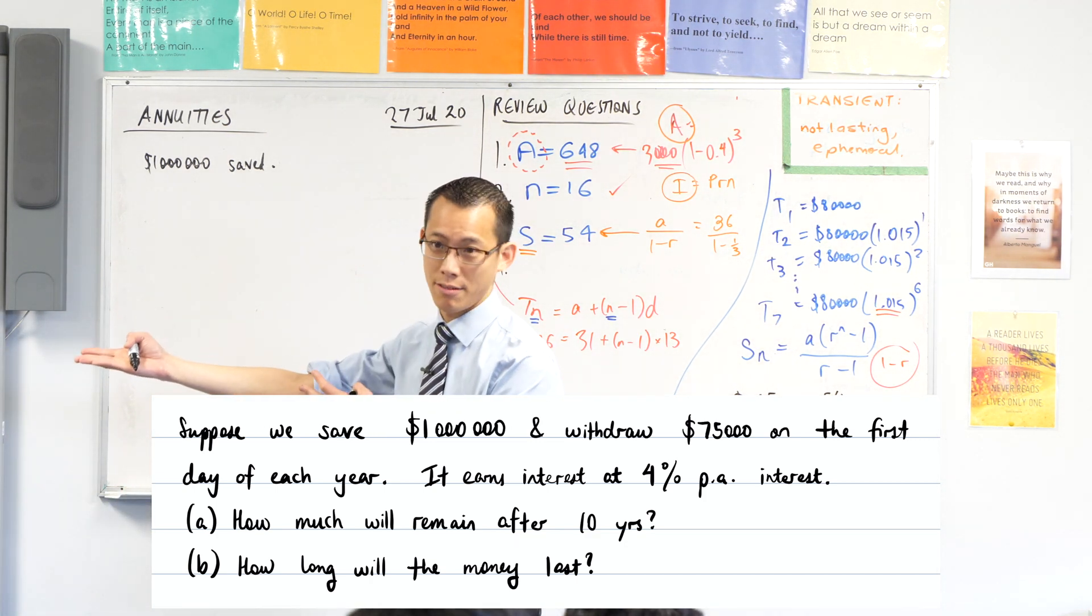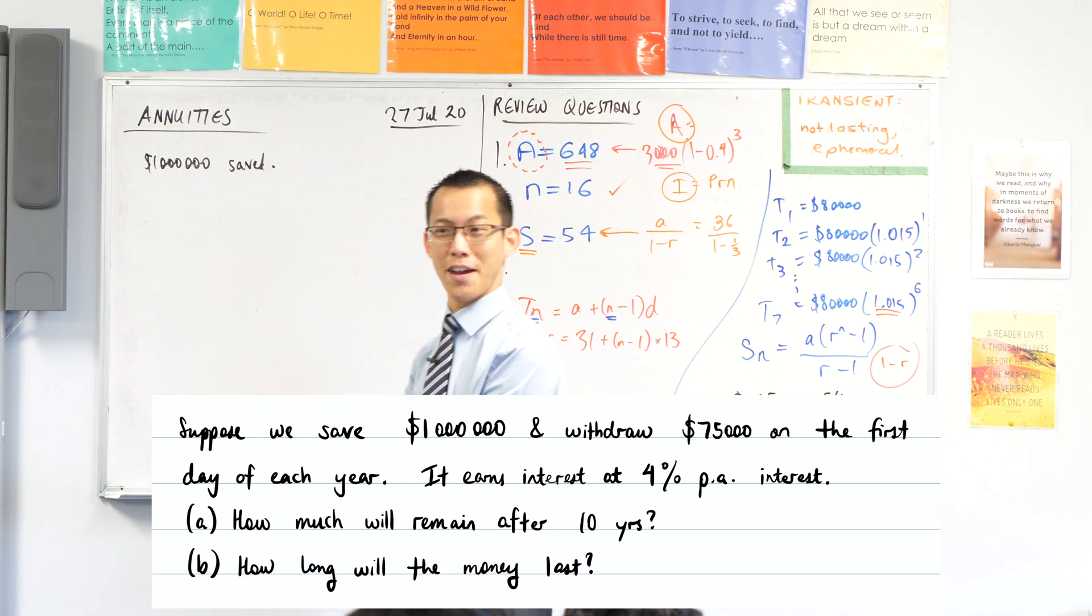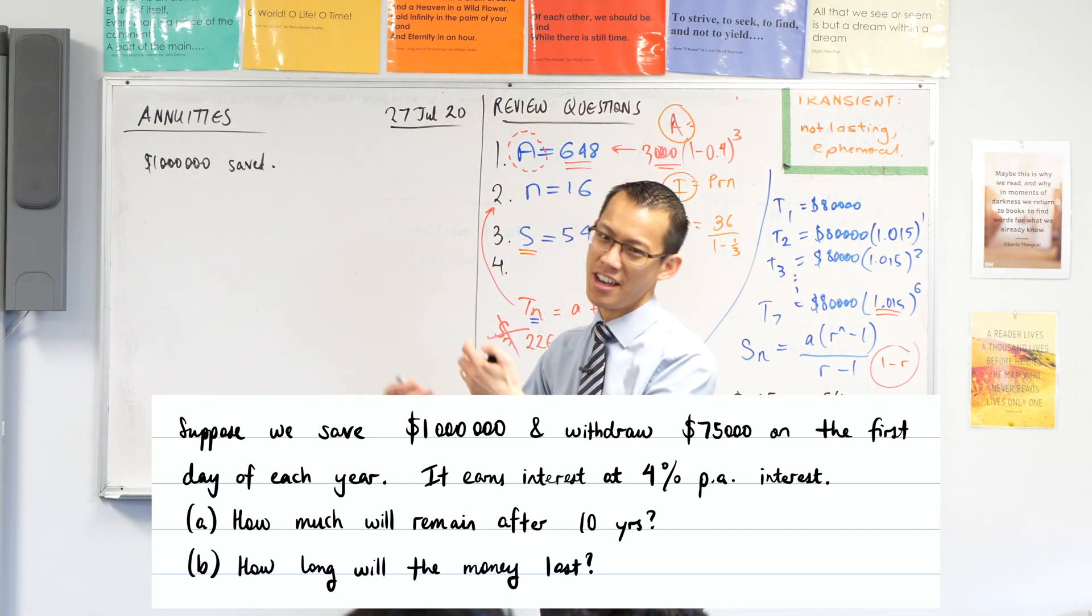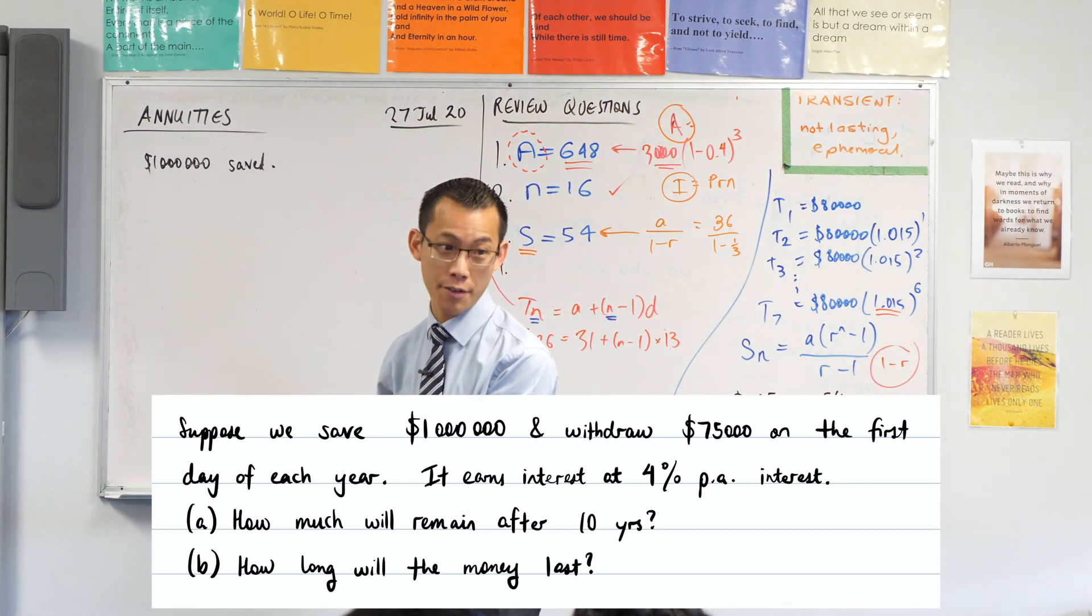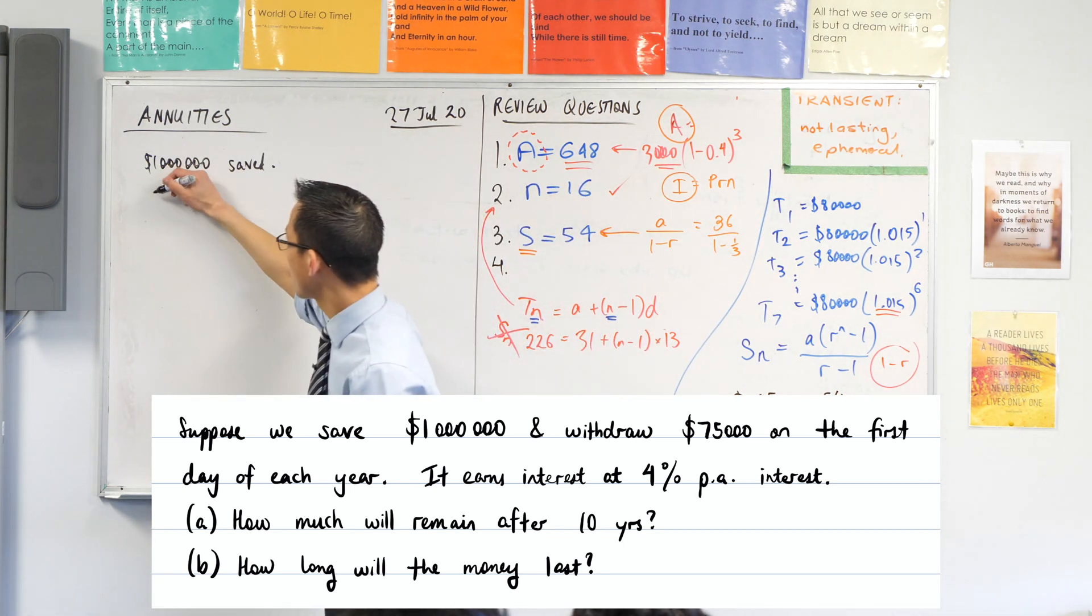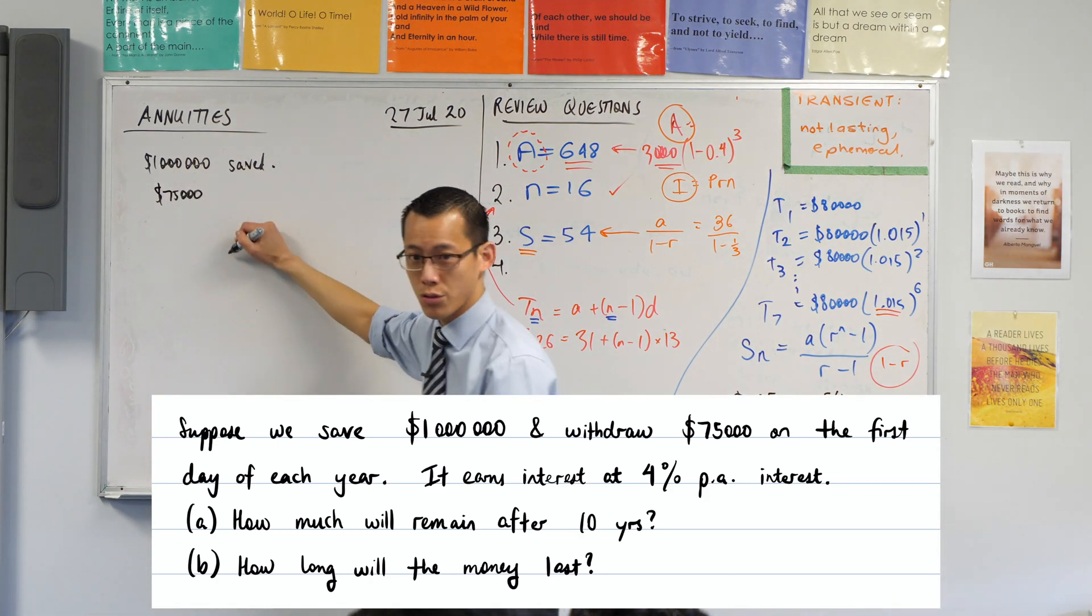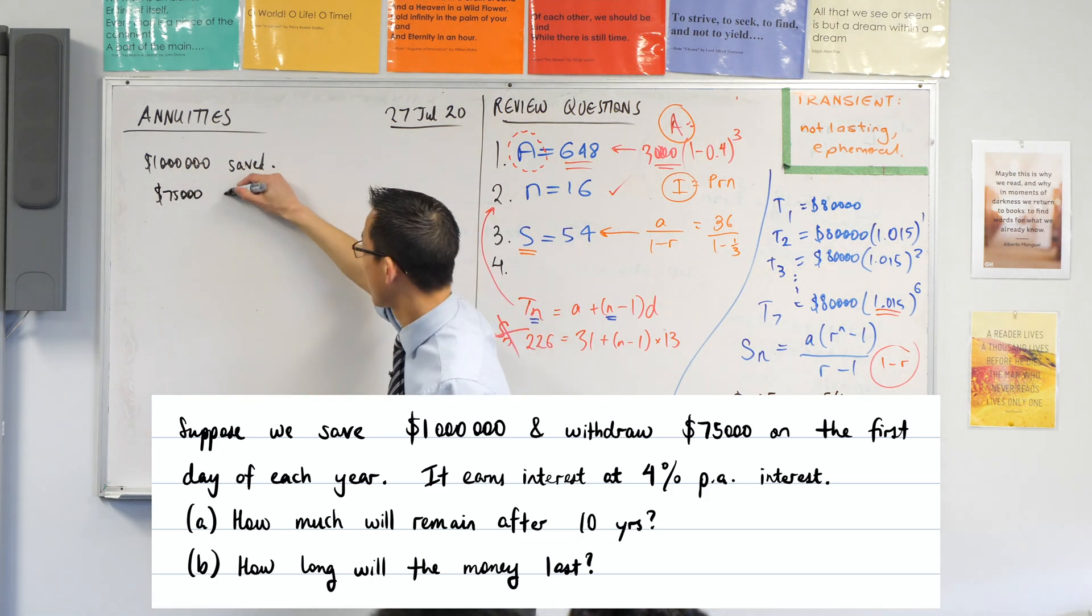So now I'm going to ask some questions about what will happen when I'm now trying to draw the money out. We've got some facts here, so let's try and get this important information down. We withdraw $75,000 on the first day of every year, so this is how much we're actually going to use.